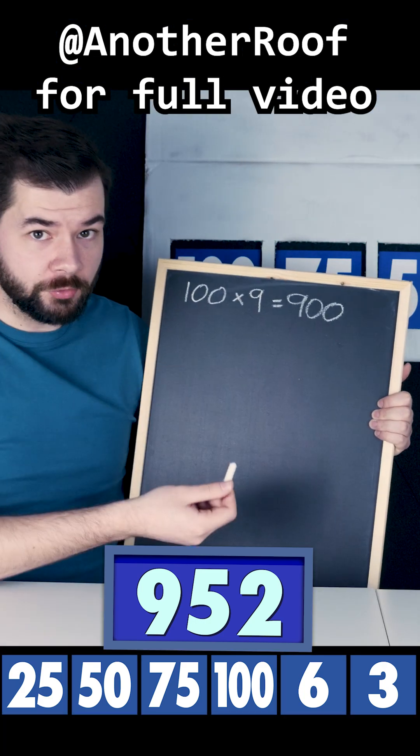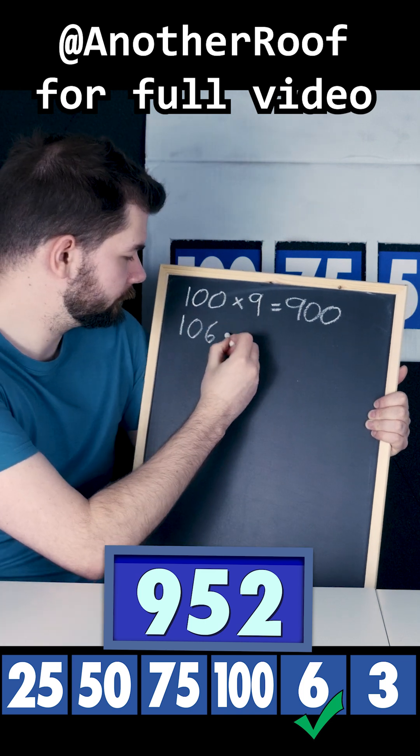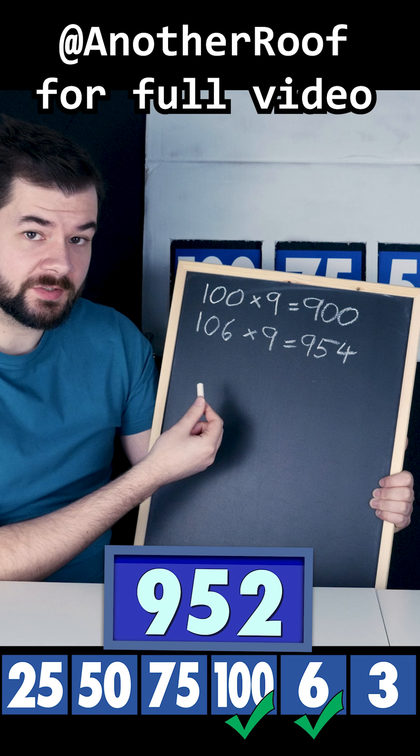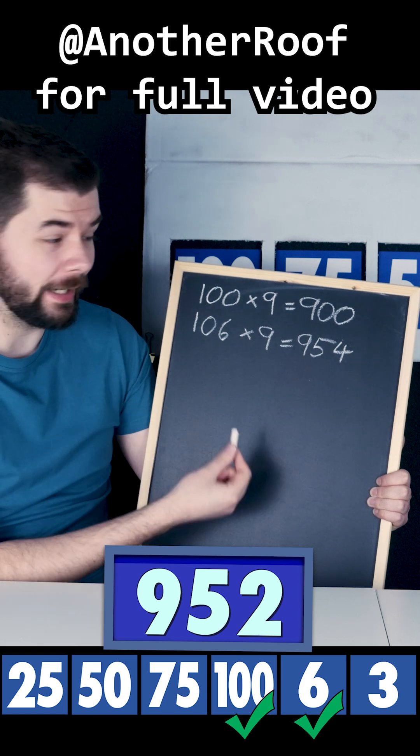He knows that 100 times 9 is 900. He also knows that 6 times 9 is 54, which gets him extremely close. So he knows he needs to do 106 multiplied by 9 and then subtract 2.